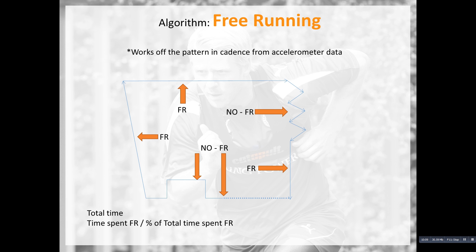Teams are starting to use free running to categorize drills — a small-sided game in a smaller area might produce less free running and more obstructed running, while a larger-scale game yields more free running. We've also tried to align this to metabolic cost, suggesting that more free running means less energy cost, whereas obstructed running over the same distance has greater energy cost because you're accelerating, stopping, being tackled, hitting the ground, and getting back up. Early results have been positive in terms of this correlation.